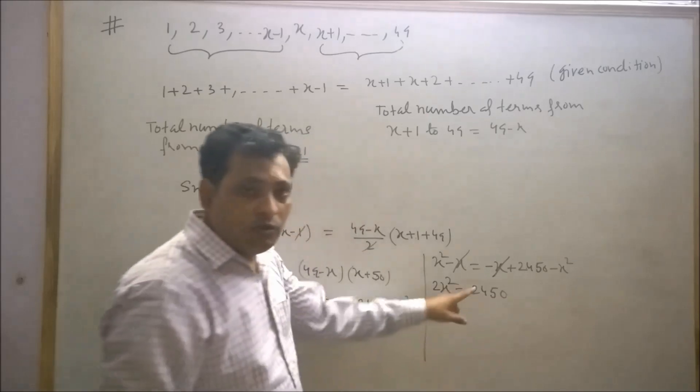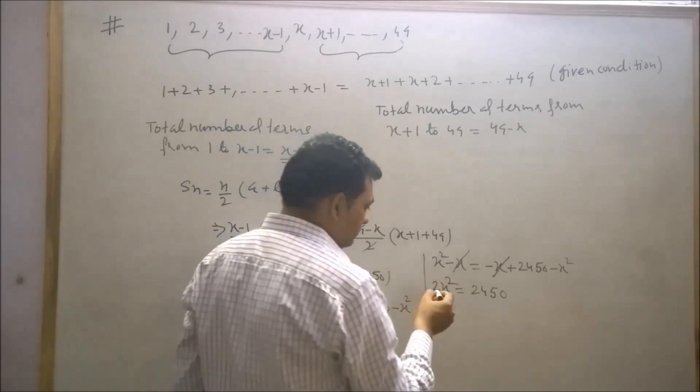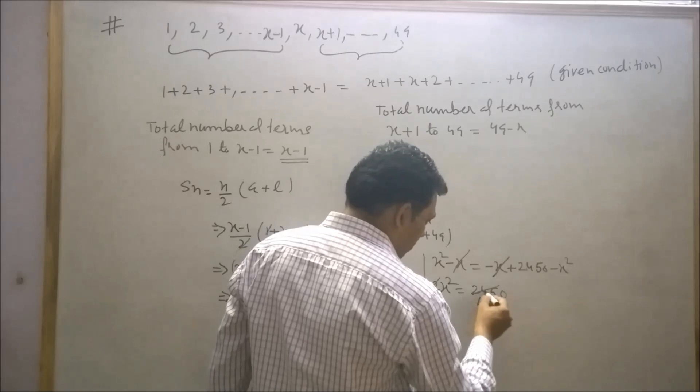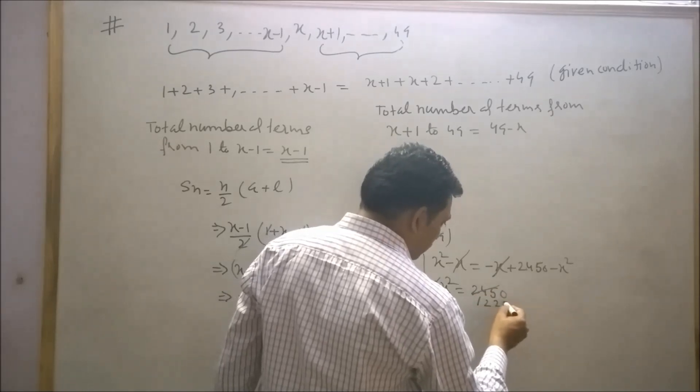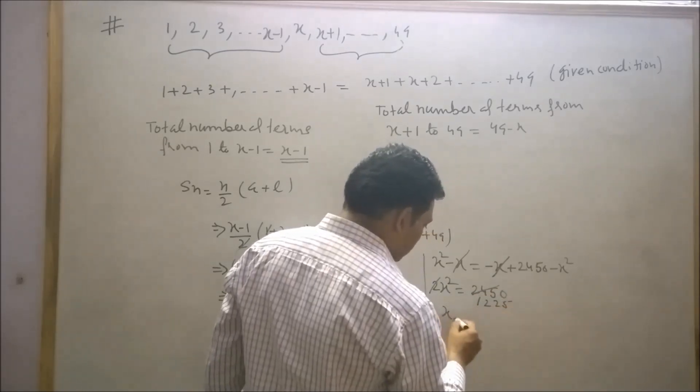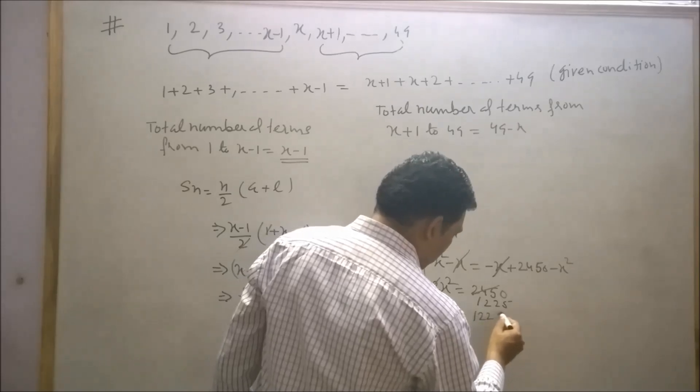This will be 2x² is equal to 2450. Now reduce 2450 by 2. 2 into 1 is 2, 2 into 2 is 4, 2 into 4 is 4, 2 into 4 is 4, and 25 divided by 2 is 10. So x² is equal to 1225.